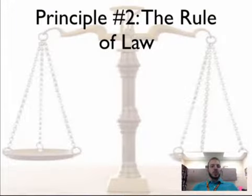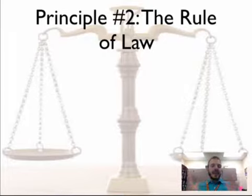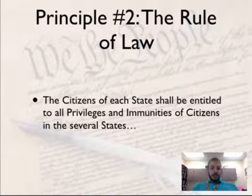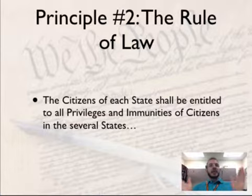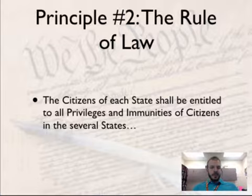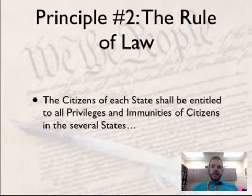Principle number two is the rule of law — that we're going to follow a system of laws that are written down and widely known, not the arbitrary decisions made by a king or any individual. Power is limited by what's on paper. Citizens of each state shall be entitled to all privileges and immunities of citizens in the several states; in other words, you cannot discriminate against people from other states. This was a problem under the Articles of Confederation, and the rule of law solves this by writing into the Constitution that we're all equal across different states.